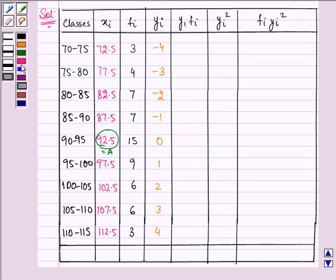Then we need to multiply fi and yi and we will get minus 12, again minus 12, minus 14, minus 7, 0, 9, 12, 18, again 12.